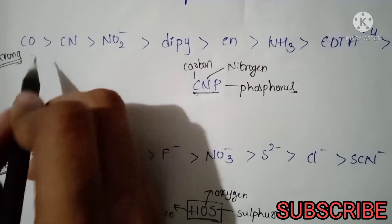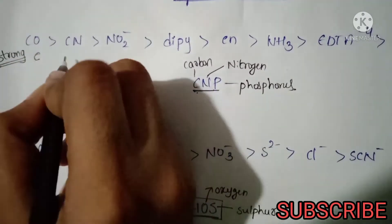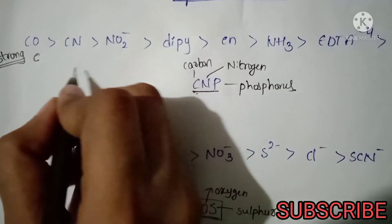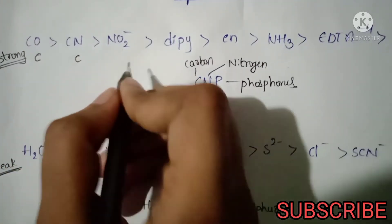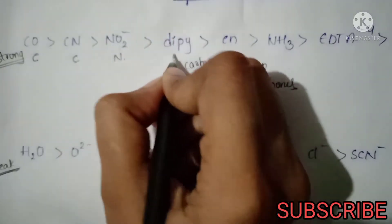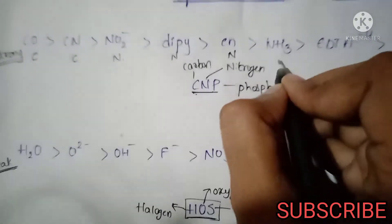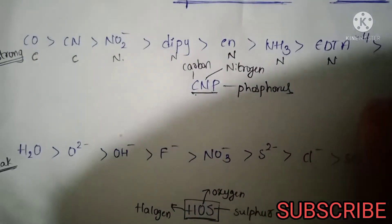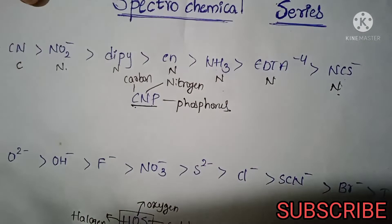For CO and CN⁻, the donor atom is carbon. For NO₂⁻, the donor atom is N (nitrogen), and for dipy, the donor atom is also N. So nitrogen is the donor atom for several strong field ligands.